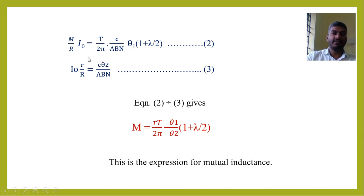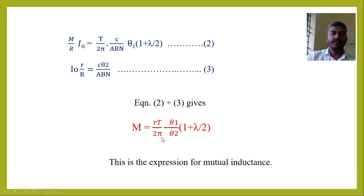Now, dividing equation 2 by equation 3, R and I₀ cancel, and after rearranging, the final expression is: M = R × T / (2π) × (θ₁ / θ₂) × (1 + λ/2). By knowing the values of R, T, the deflections θ₁ and θ₂, and the logarithmic decrement λ, we can calculate the mutual inductance. Thank you.